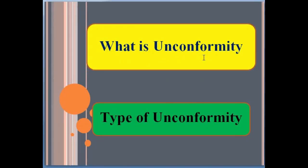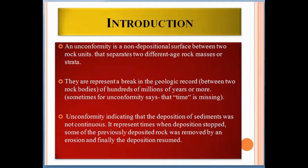Today we talk about what is unconformity and types of unconformity, and also how each unconformity forms. An unconformity is a non-depositional surface between two rock units that separates two different age rock masses or strata. It represents a break in the geologic record between two rock bodies of hundreds of millions of years or more. Sometimes it is said that time is missing, indicating that deposition of sediments was non-continuous.